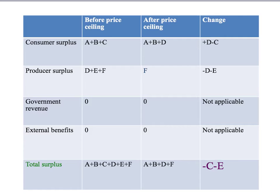The loss of social surplus due to the price ceiling is given by areas C and E. We started with C and E as part of social surplus, but they disappear due to the price ceiling. Area D is simply a transfer from producers to consumers, but areas C and E are lost — that is our deadweight loss, our loss of social surplus compared to the perfectly competitive equilibrium.